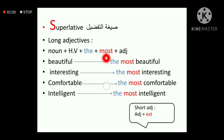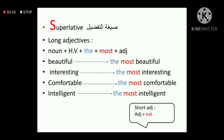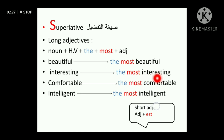With long adjectives we use 'most,' similar to 'more' in the comparative rule — notice: 'more' with the comparative, 'most' with the superlative. For example, the adjective 'beautiful' in superlative form becomes 'the most beautiful.' 'Interesting' is a long adjective, so it becomes 'the most interesting.' And 'comfortable' — also long — becomes 'the most comfortable.'